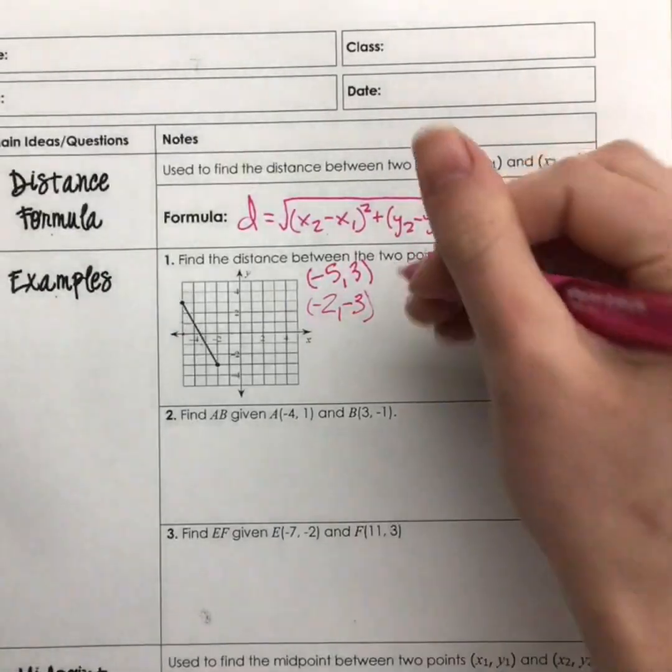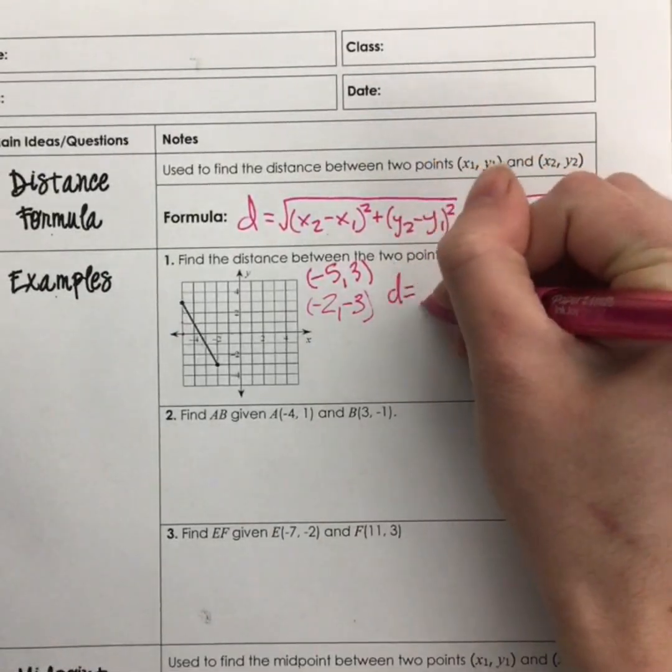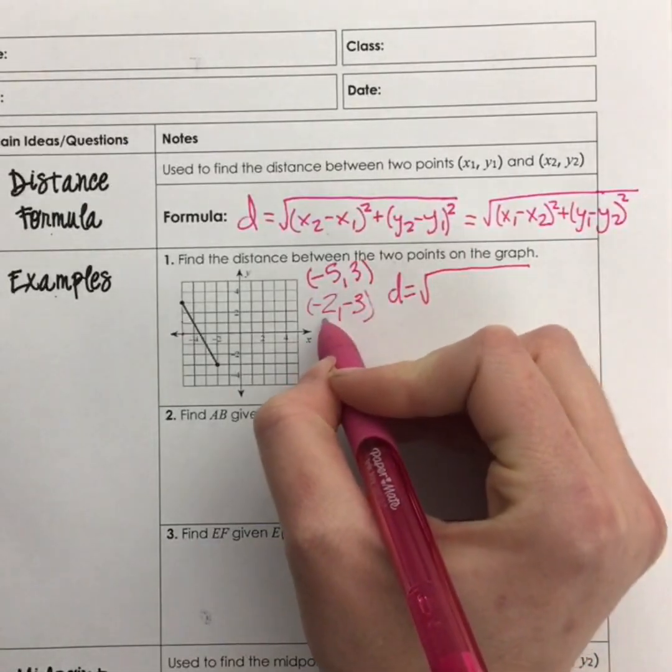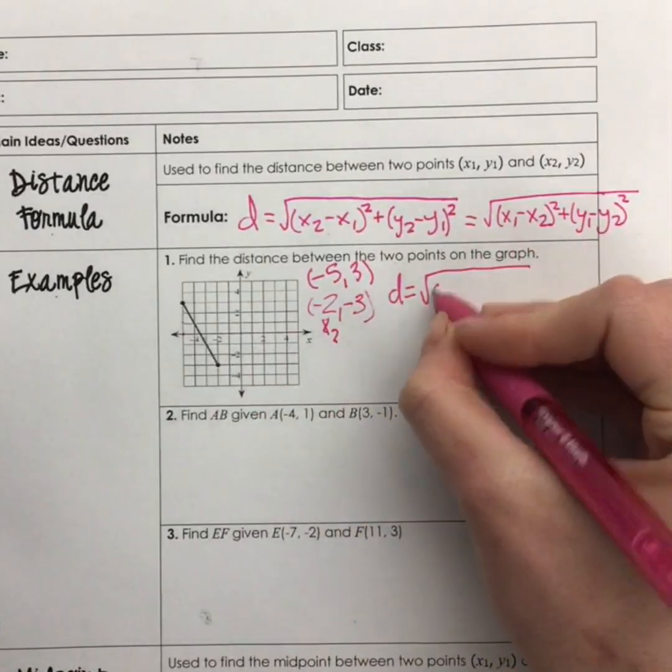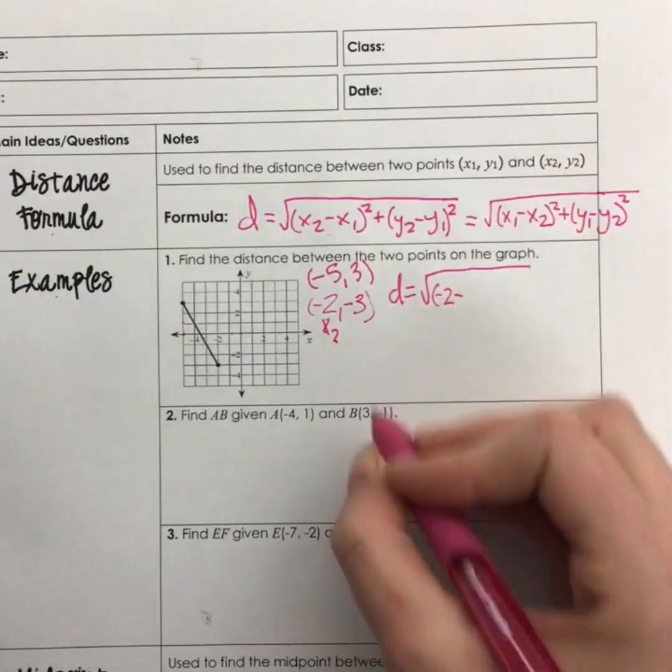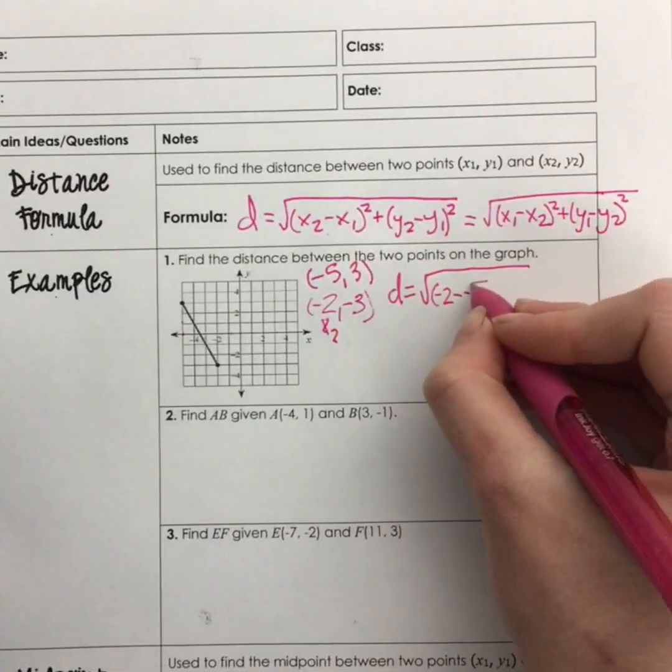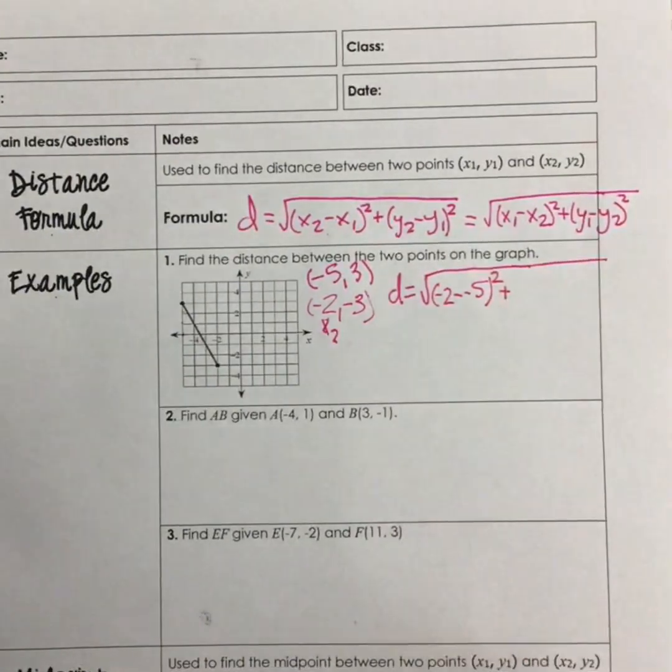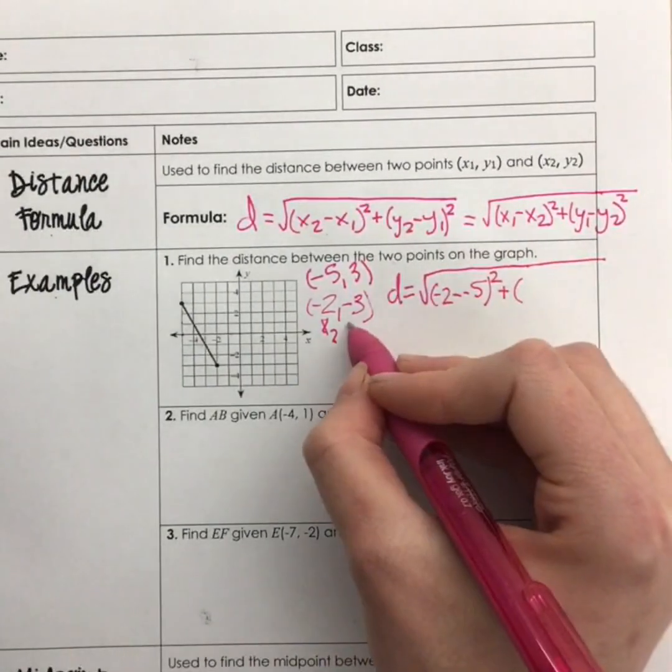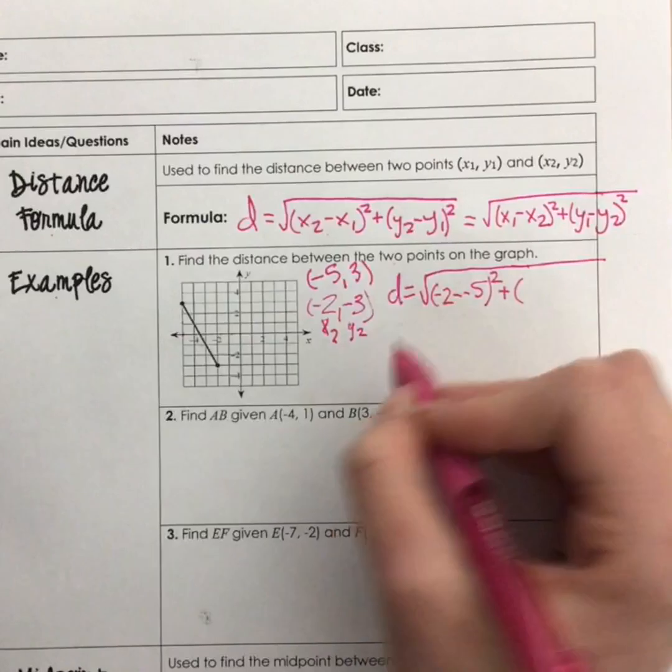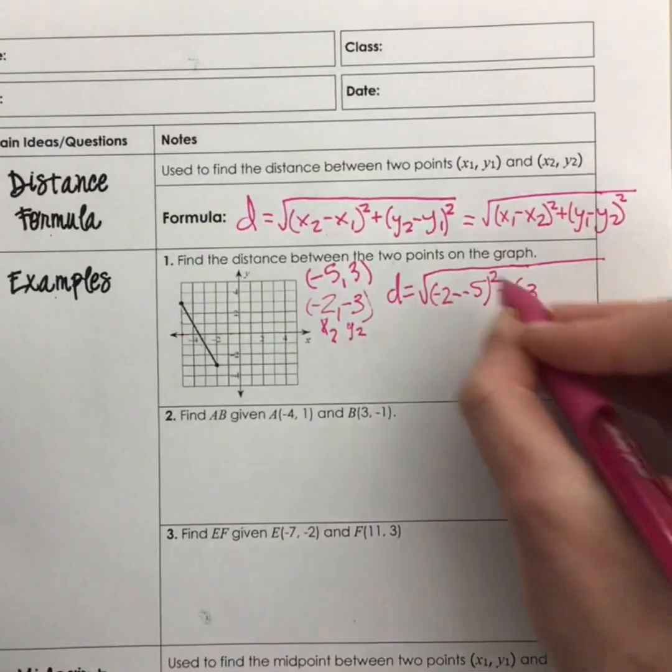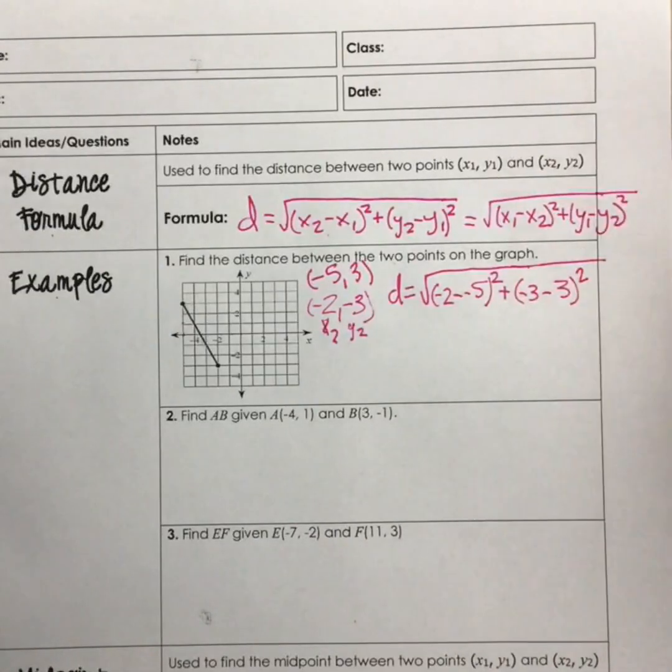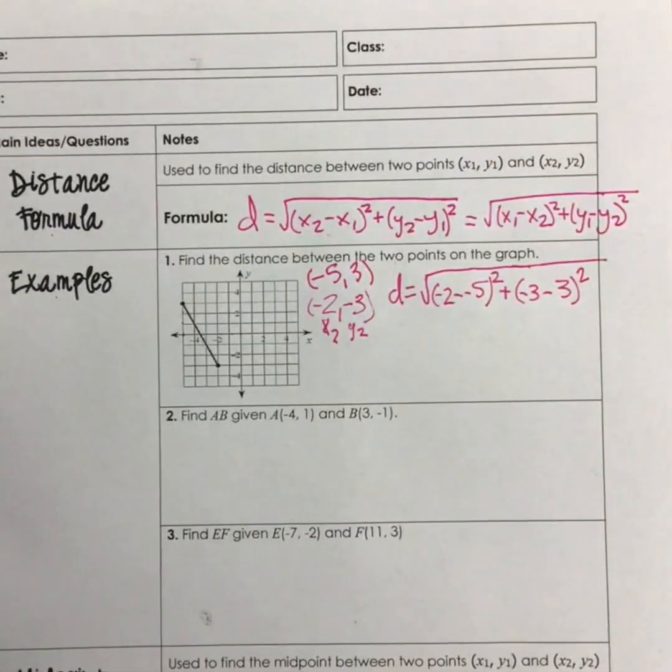So now for distance, we're going to have the distance of our x₂, so that's negative 2, negative 2 minus our x₁, which is negative 5, square that, plus my y₂, since I did my x₂ first, so negative 3, and then minus y₁, which is 3, and we'll square that.